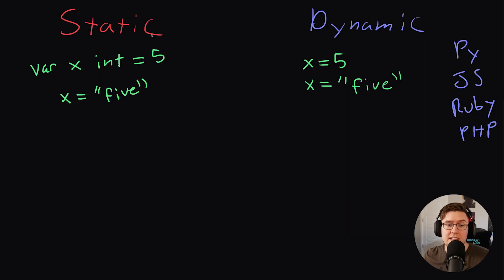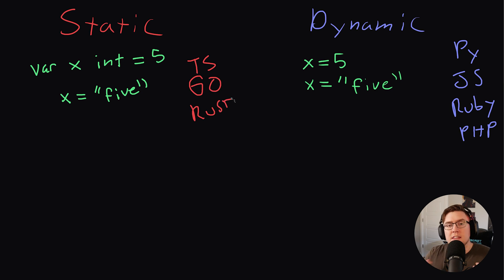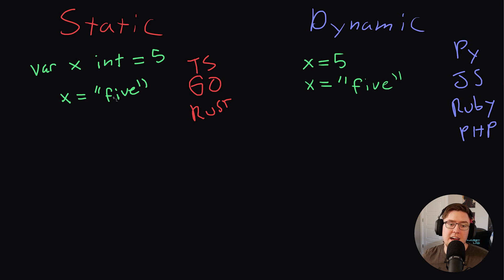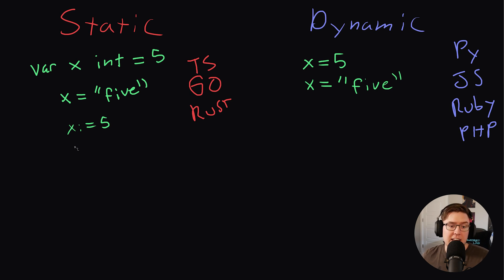Now that trade-off used to be the case, but these days I'd argue that static typing is simply better. That's because newer languages — like TypeScript, Go, and Rust — have a thing called type inference. Type inference basically gives us the best of both worlds. It allows us to have static typing but with a very simple syntax. So for example, in Go, rather than using that verbose syntax, I could just write x := 5. By doing that, the computer knows that x is an integer — it can infer that type from its initial value. And then later, if I try to change x to the string five, again, that's not allowed.